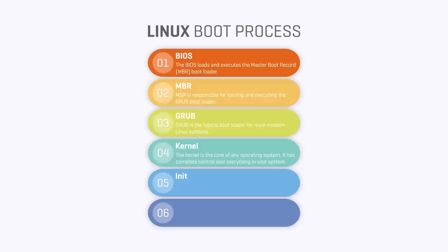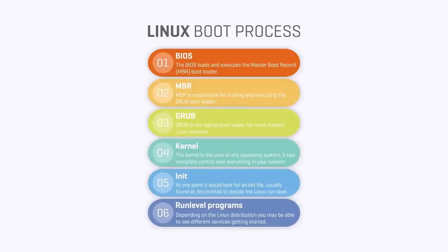On step five, we have init — initialize. The system runs and executes the run level programs, looks for the init file, and decides the Linux run level. There are six different run levels available in Linux. On step six, run level programs: depending on the Linux distribution installed, you might see different services getting started — for example, 'starting sendmail... ok.' These are called run level programs and each one gets executed at the corresponding run level.